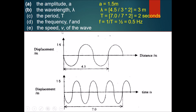Finally, for the speed of the wave: since both graphs represent the same wave, we can use values from both. The formula is v equals f times lambda. The frequency is 0.5 hertz and the wavelength is 3 meters, so the wave speed is 0.5 times 3, which gives a final answer of 1.5 meters per second.